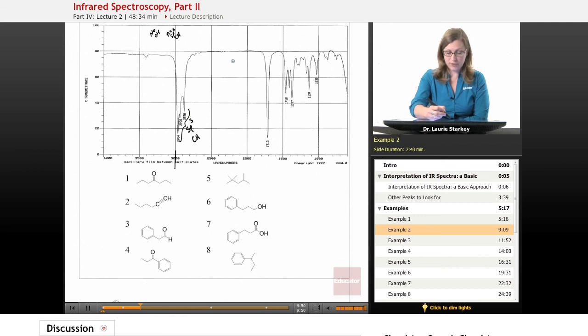We continue down reading left to right at 2200. Do we have any triple bonds? No triple bonds. And then we move down to 1700. At 1700, what do we find? We do have a carbonyl. A systematic approach means we're going to be looking for our obvious peaks and we're not going to be missing them anytime they show up.